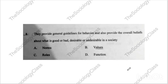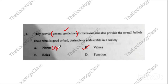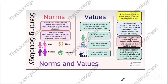Question number eight: 'They provide general guidelines for behavior and also provide overall beliefs about what is good or bad, desirable or undesirable in a society.' As I explained in the 2020 paper video, when 'general guidelines' appear, the correct answer is B — values. Remember: norms are specific guidelines. To solve MCQs you have to focus on keywords.